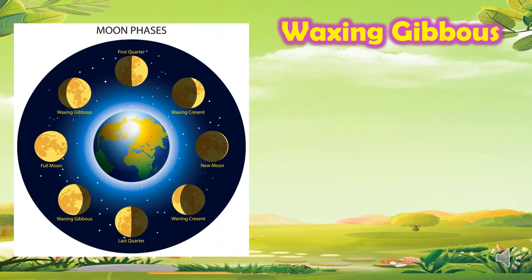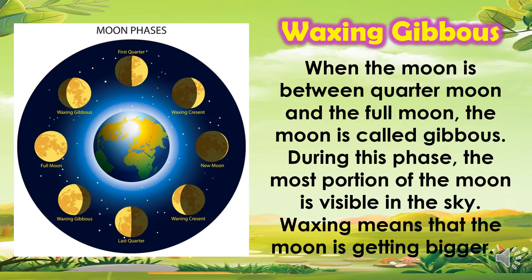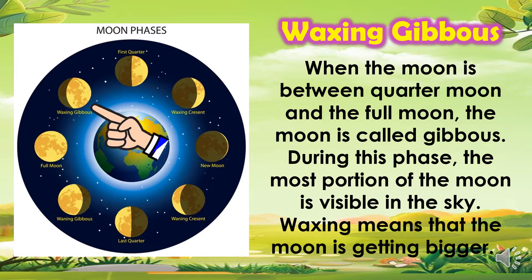Another phase is the waxing gibbous. When the moon is between quarter moon and the full moon, the moon is called gibbous. During this phase, most of the moon's portion is visible in the sky. Waxing means that the moon is getting bigger.